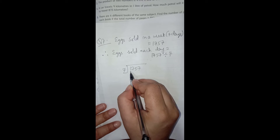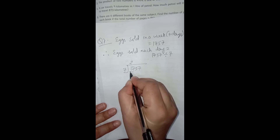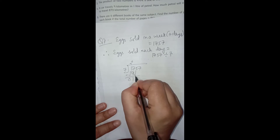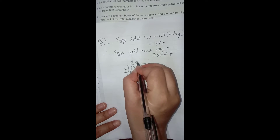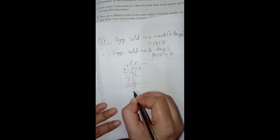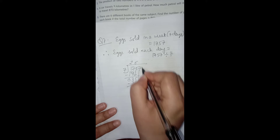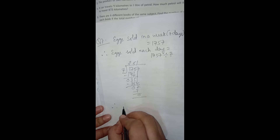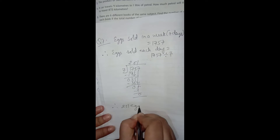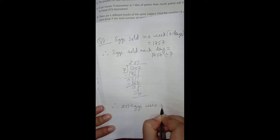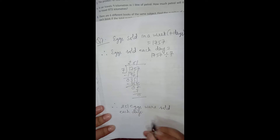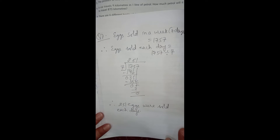The first digit of the dividend is less than the divisor, so we take two digits. 7 twos are 14, because 7 threes are 21 which is greater. After subtracting we get 3. Bringing down 5, 7 fives are 35, subtracting gives 0. Bringing down 7, 7 ones are 7, remainder is 0. Therefore, 251 eggs were sold each day — every day the poultry farm sold 251 eggs.